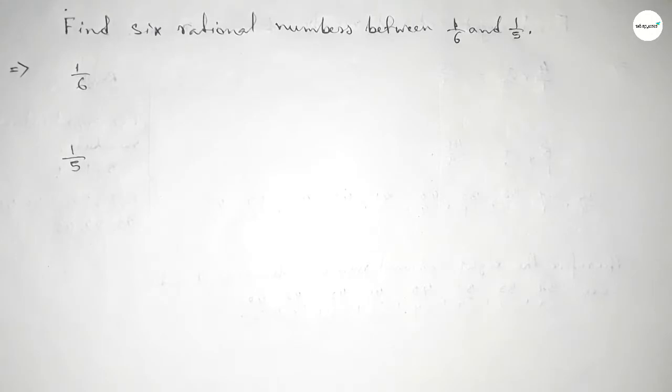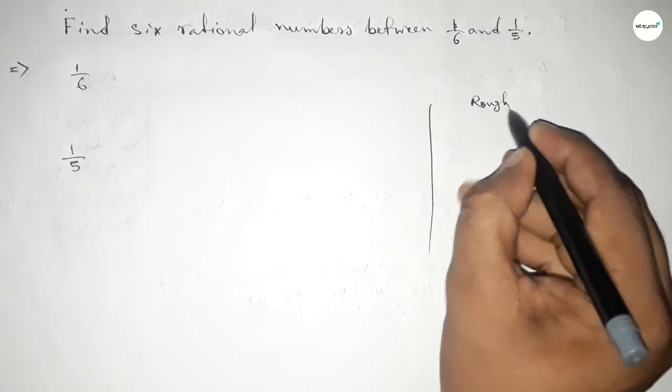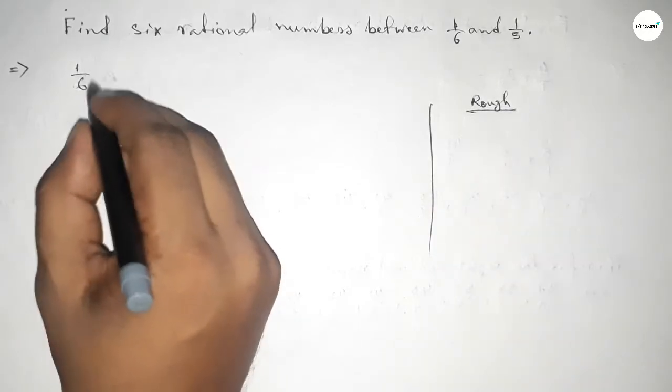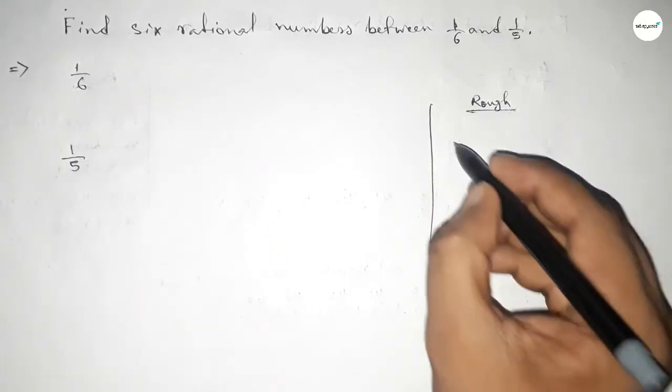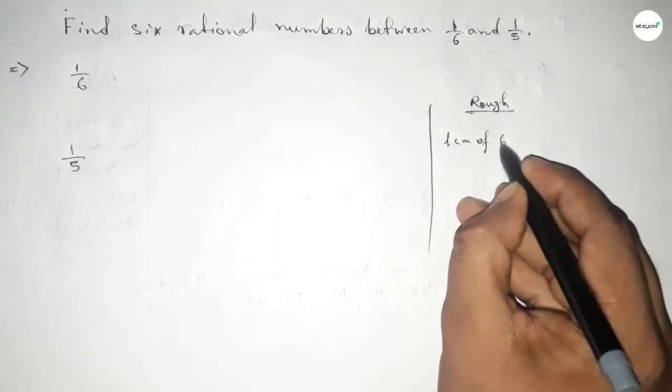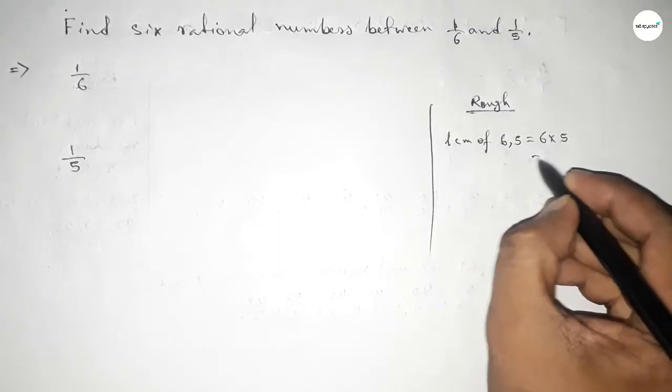First, write down the given numbers: 1/6 and 1/5. The denominators are not equal, so we need to find the LCM of 6 and 5, which is 30.